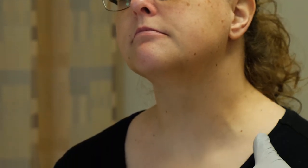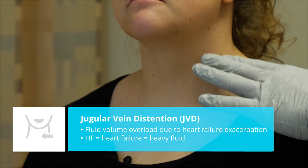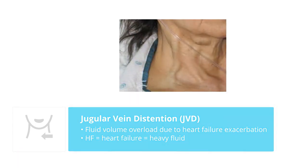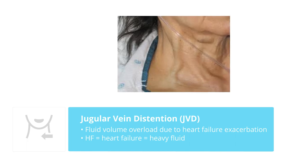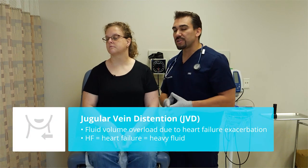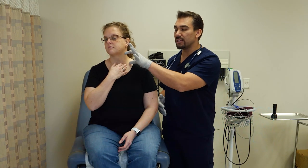Moving on to the neck — one of the biggest assessments is for JVD, which is jugular vein distension. This is typically for our fluid volume overload patients who are in heart failure exacerbation. Just remember: HF for heart failure, HF for heavy fluid. If your patient is reclined, it'll put a lot more pressure and have the vein protrude more.